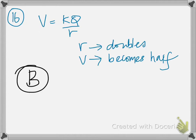Sixteen. Potential is given by KQ by R. And at two meters away, if it is 100 volt, when the distance doubles, of course the potential becomes half.